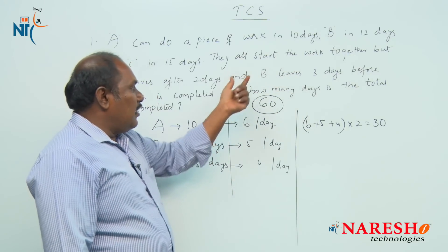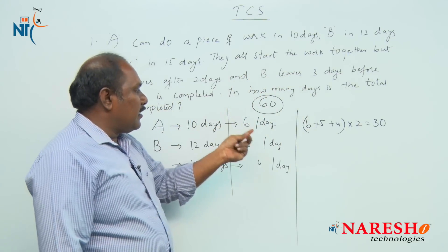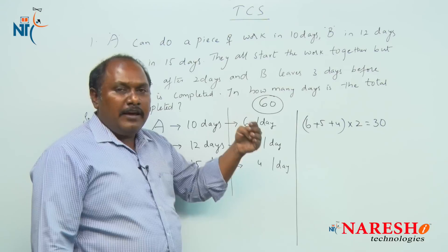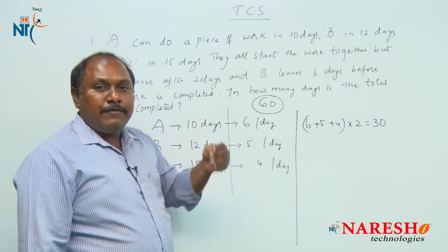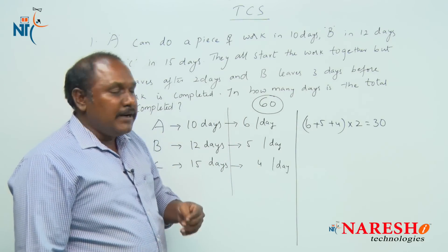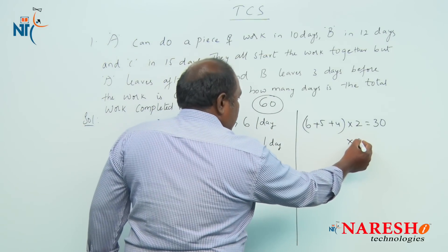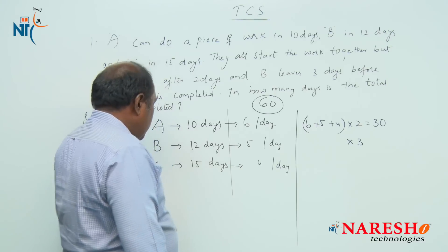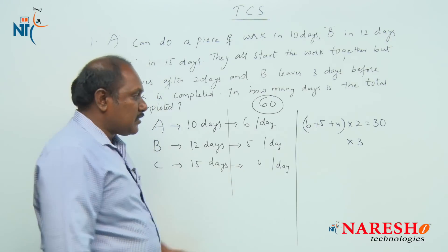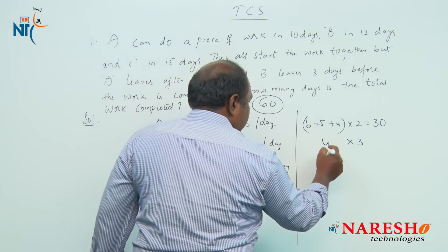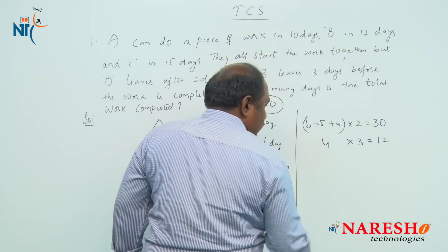Coming to the last 3 days: B leaves 3 days before the work is completed. After A quit, B and C are working, but B quit 3 days before the work is completed — that is, the last 3 days only C is working. C eats 4 chocolates per day, so in the last 3 days he eats 4 into 3, that is 12 chocolates.